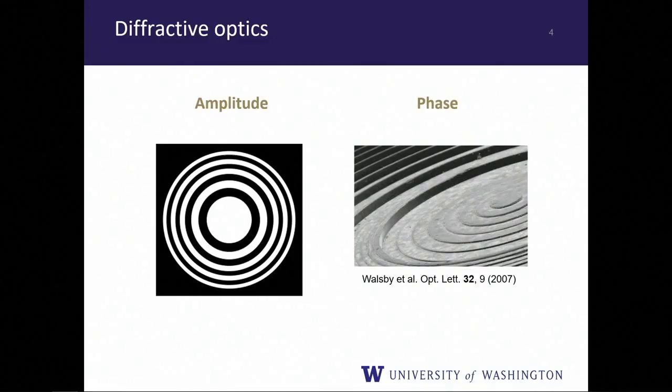Metasurfaces are generally implemented as phase optical elements. A diffractive phase element has multi-levels, and each level has a different thickness corresponding to different discrete phase shifts that the light experiences as it passes. This is an actual fabricated diffractive optical element.